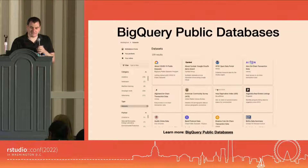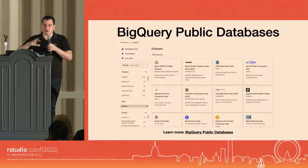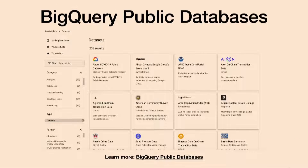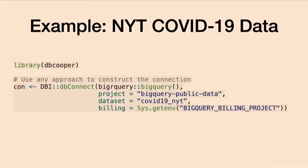I'm going to show an example of exploring a database using DB Cooper. This is the New York Times COVID-19 database. Google makes public a large set of data — 239 databases in Google BigQuery. This is a phenomenal resource because that means there are 239 packages you could write, swapping each of these data sources. We'd start by creating the connection — DB Cooper doesn't help with this; we create it ourselves using DBI's dbConnect, whatever approach we'd generally use to create a database connection.